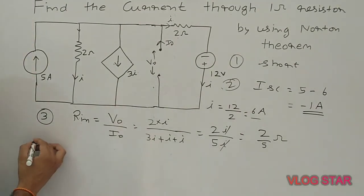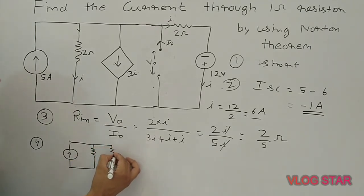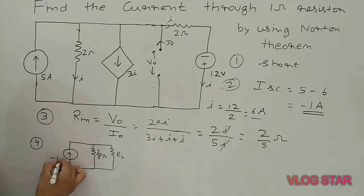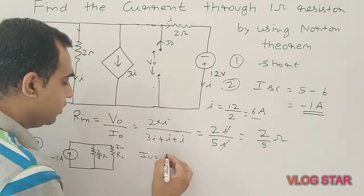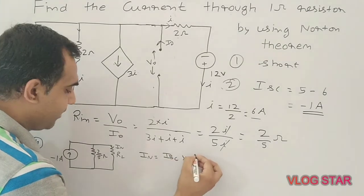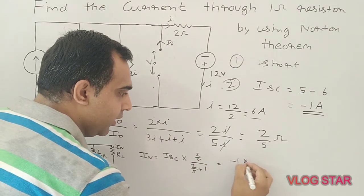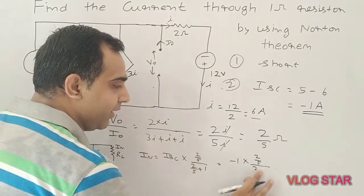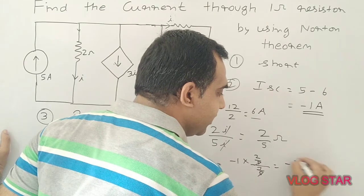The last step is to calculate the Norton current using the equivalent circuit with the load resistance and Norton resistance of 2/5 ohm. ISC is minus 1 ampere. Using current divider: I-N equals ISC times (2/5) divided by (2/5 plus 1), which is minus 1 times (2/5) divided by (7/5), giving minus 2 by 7 ampere.